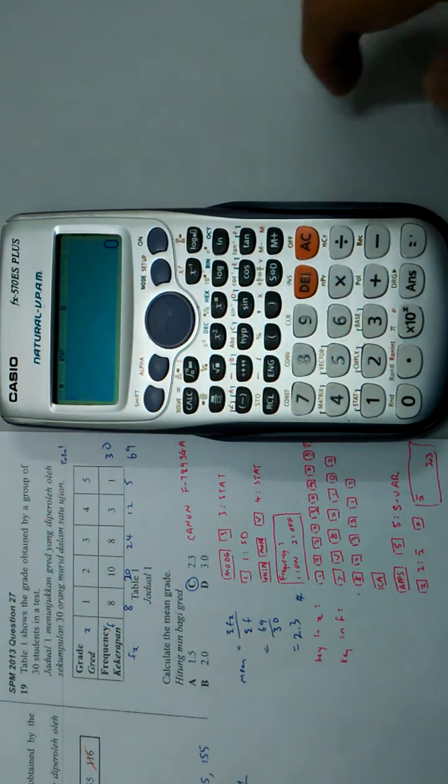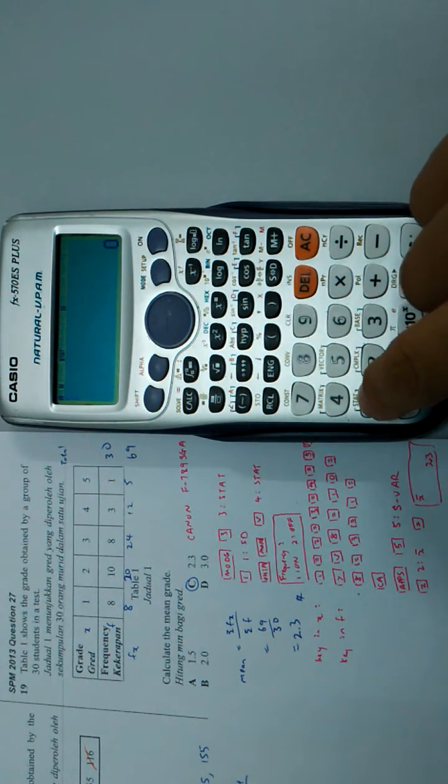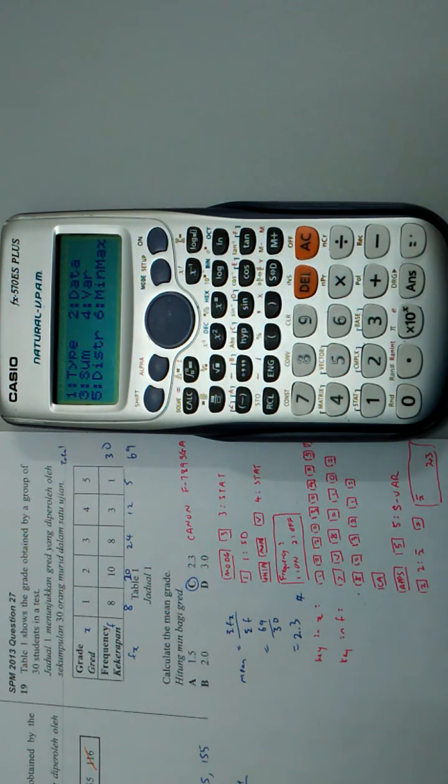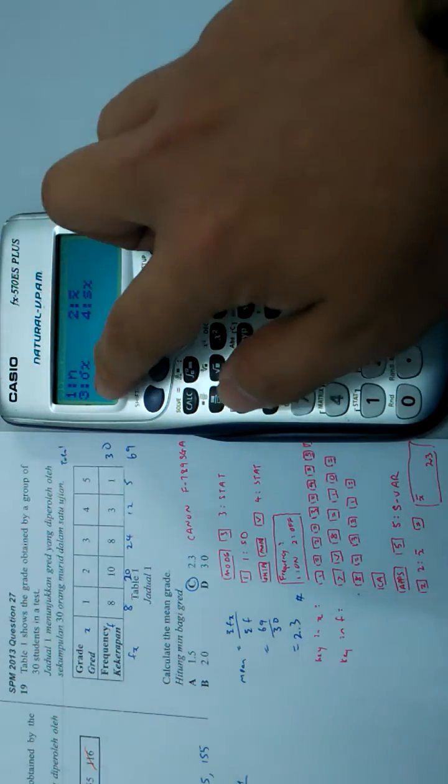I press AC, then Shift 1 to call the statistics menu, then 4 for variables. The menu shows mean, σ (standard deviation for population), and s (standard deviation for sample).